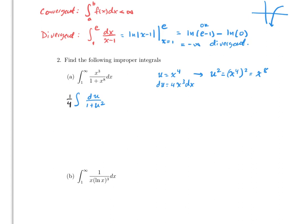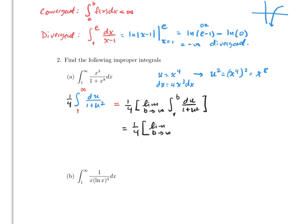So the limits remain 1 to infinity. For the improper integral, this equals (1/4) times the limit as b goes to infinity of the integral from 1 to b of du over (1 plus u²). This is a classic integral — arctangent — so this equals (1/4) times the limit as b goes to infinity of arctan(u) from 1 to b.